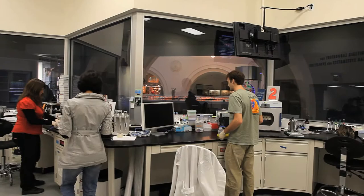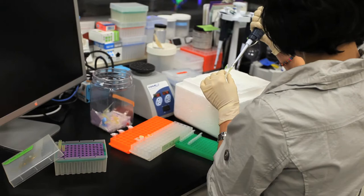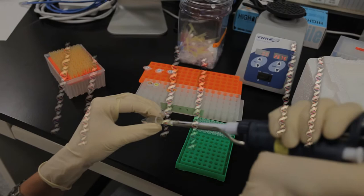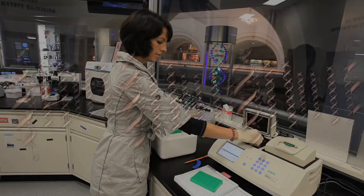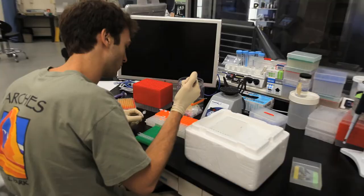Once we've extracted the DNA, we now want to focus in on specific parts of the genome, and we want to choose genes that we know will tell us a little bit about the evolutionary history of the group, and that's where PCR, or the polymerase chain reaction, comes in. The polymerase chain reaction allows us to make millions of copies of the part of the genome we're interested in.